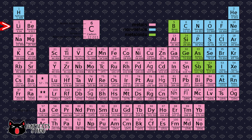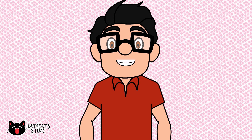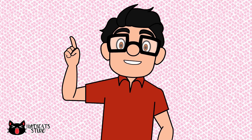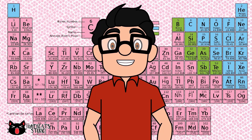How many periods do we have on the periodic table? That's right — there are seven periods on the periodic table. Try to name the missing elements on periods one and two.